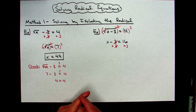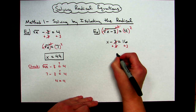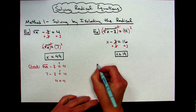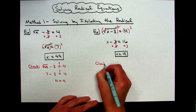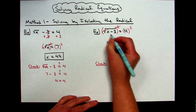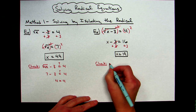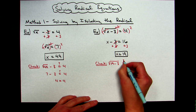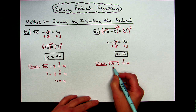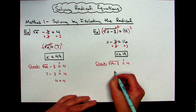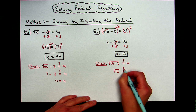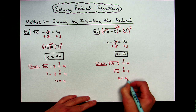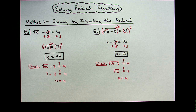So then x equals nineteen. Again, you really should go through the check process. Plug nineteen back in where x is: square root of nineteen minus three — is that equal to four? Nineteen minus three gives me sixteen, and the square root of sixteen does equal four. So it works, but you run that check just to make sure.